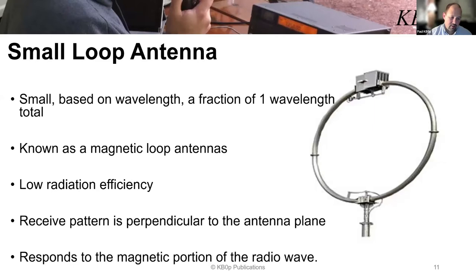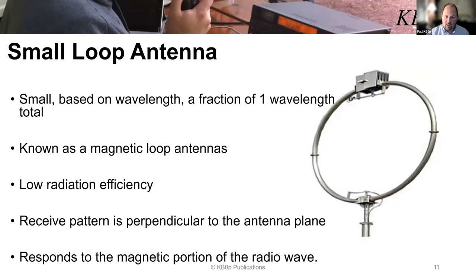What's interesting is the receive pattern is perpendicular to the antenna plane, which is different than the large loop. And just like I mentioned, the small loop antenna responds to the magnetic portion of the radio wave. Because the voltage is relatively low — it's essentially a dead short circuit — the coupling of this loop antenna will not couple as easily to nearby objects. That's another reason why they are generally quiet antennas for receiving.